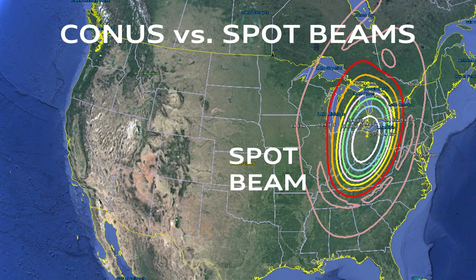This is a spot beam. DirecTV and DISH use very tightly focused beams over very particular areas to provide local channels to different areas. That's why if you drive away from your local area too far in your RV, you're going to get all those national CONUS channels, but you won't get any of your locals.